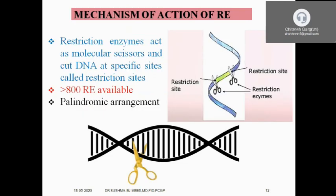The mechanism of restriction endonucleases involves recognition of palindromic sequences — sequences that read the same forwards and backwards, like the word 'madam.' For example, the sequence 5'-GAATTC-3' on one strand, reading 3' to 5' gives CTTAAG on the complementary strand — this is the palindromic arrangement recognized by restriction endonucleases. The enzyme acts between guanine-adenine and thymine-cytosine, producing sticky ends.